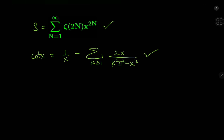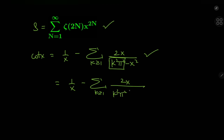Well, I was just playing around with the series expansion and I stumbled onto the result, and that's why I'm presenting you the solution development. The first thing I want to do is factor out a term from the denominator. So we can write this as 1/x minus the sum over k of 2x divided by k²π² times (1 minus x²/k²π²).